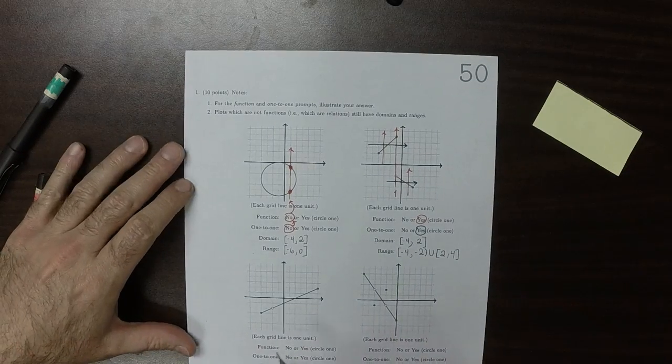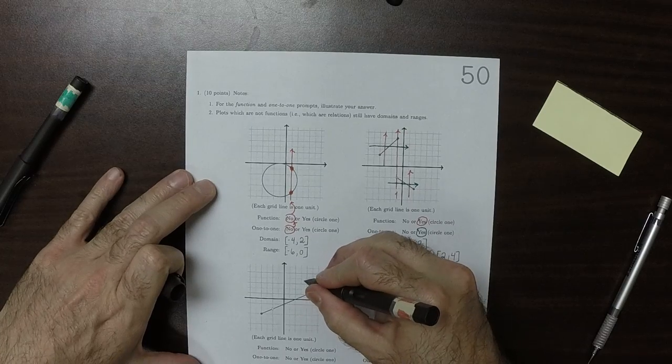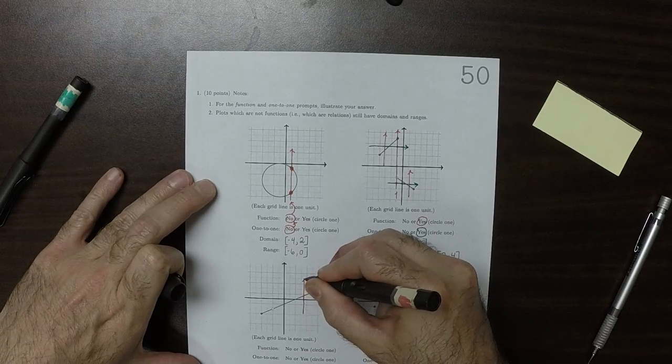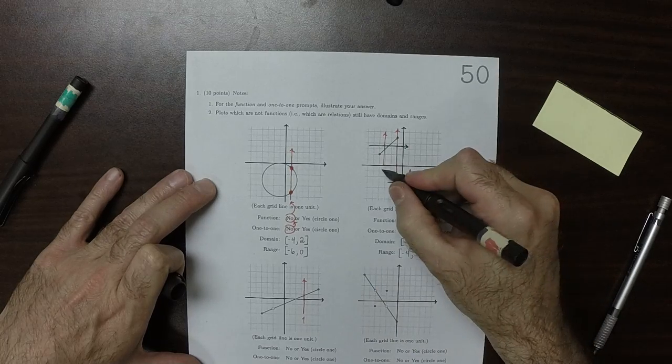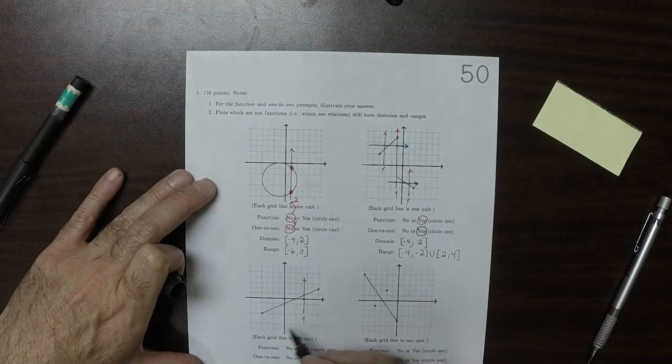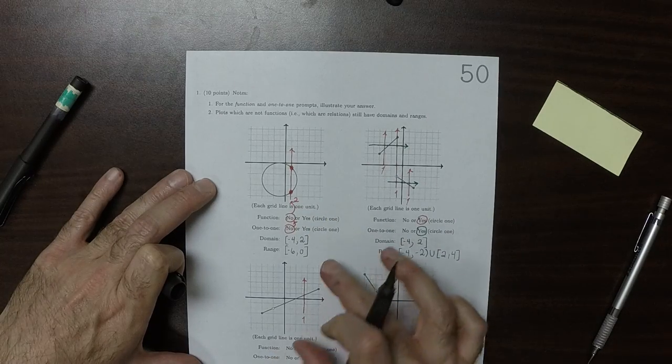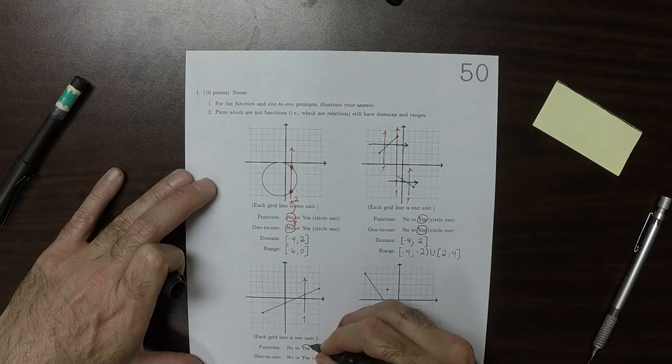So is this a function? Yes. It passes the vertical line test. So it's always one there. That's one. That's one. That's one. That's two intersections. So it's always one, except for when it's zero. So yes, it's a function.